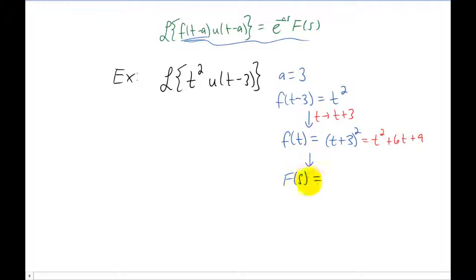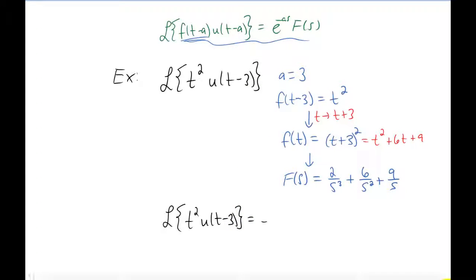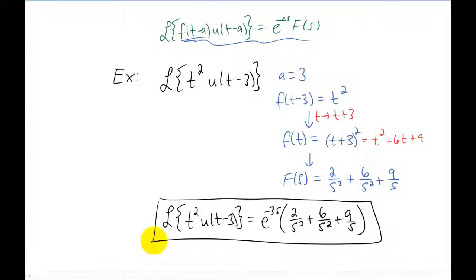So now we have that capital F of s is this right here. And now we have everything we need to write down an answer. The answer to our original Laplace transform is e to the negative as, which is e to the negative 3s, times F of s, which is 2 over s cubed plus 6 over s squared plus 9 over s. And that's it.